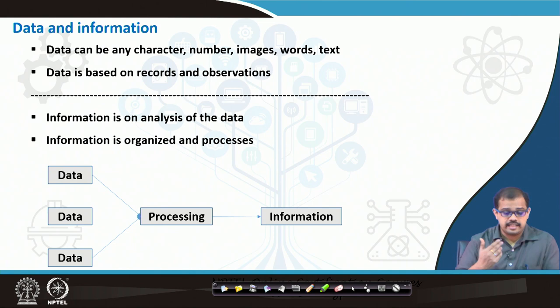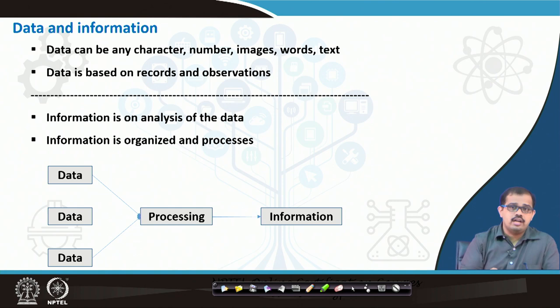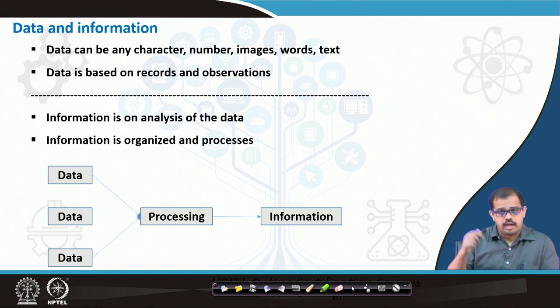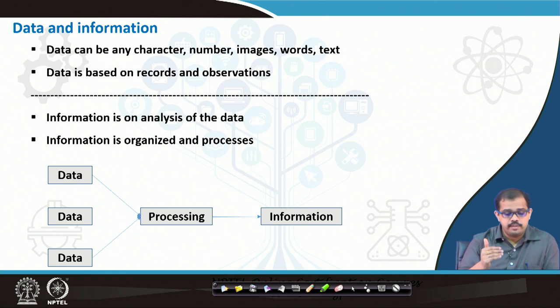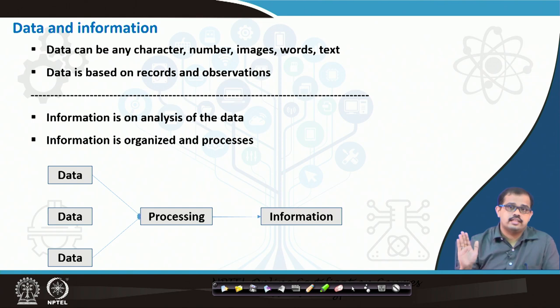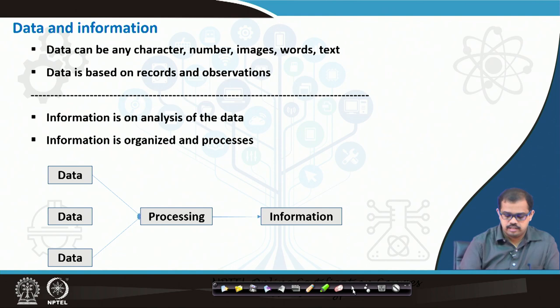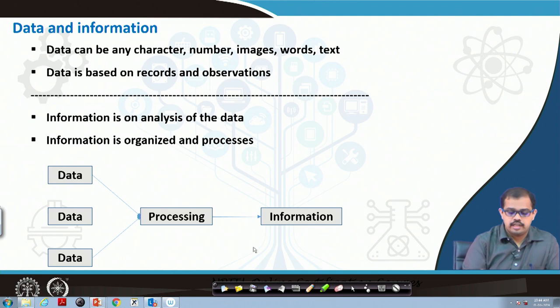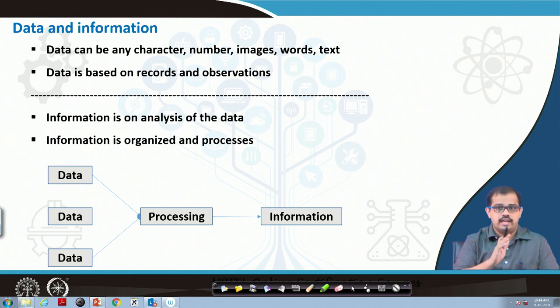Data can be any character, number, images, or words — it can be anything, including records and observations. Much data is collected based on governmental records and observations made over a period of time, which when converted to digital form becomes data. Information, on the other hand, is an analysis of whatever data has come in — information is organized and processed. When we give a generalized structure: you have a huge number of data points, you process them, and they form information.